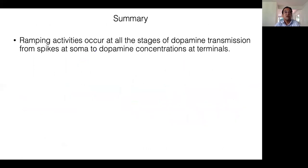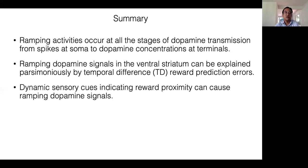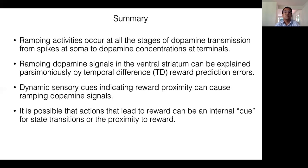In summary, ramping activities occur at all the stages of dopamine transmission from spikes at soma to dopamine concentration at terminals. Ramping dopamine signals in the ventral striatum can be explained parsimoniously by temporal difference reward prediction errors. We also showed that dynamic sensory cues indicating reward proximity, including navigational stimuli or simple moving bar, can cause ramping dopamine signals highlighting the importance of sensory feedback that indicates transitions over states.